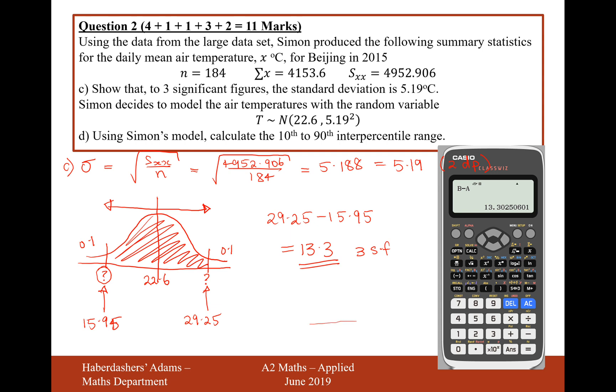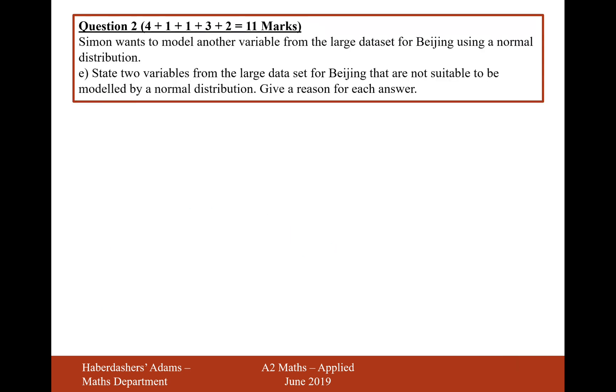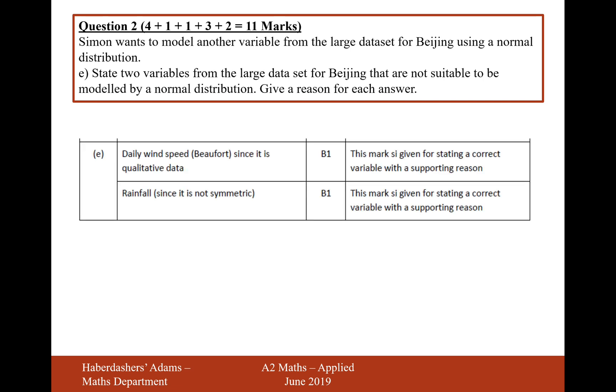And moving on to the next part now, question E says Simon wants to model another variable from the large data set for Beijing using a normal distribution. State two variables from the large data set for Beijing that are not suitable to be modeled by a normal distribution. Give a reason for each answer.